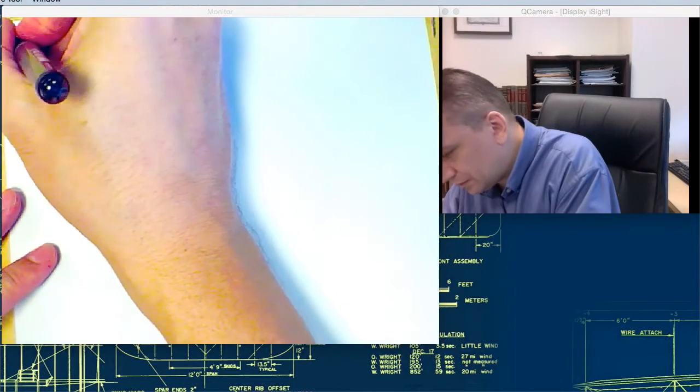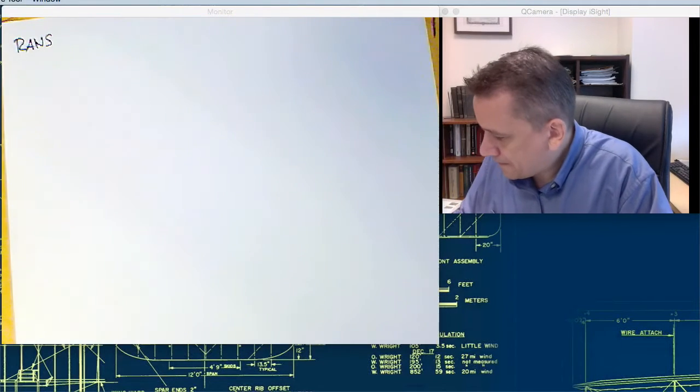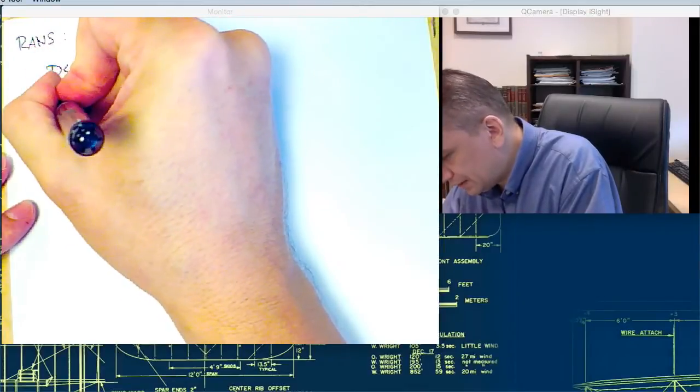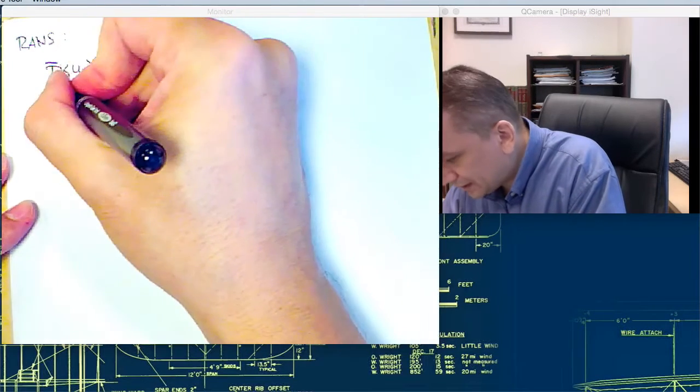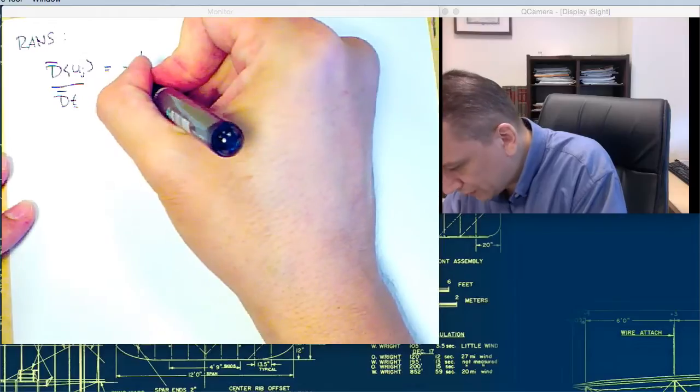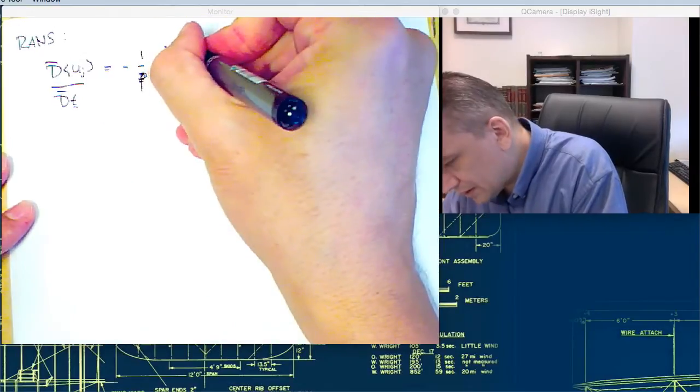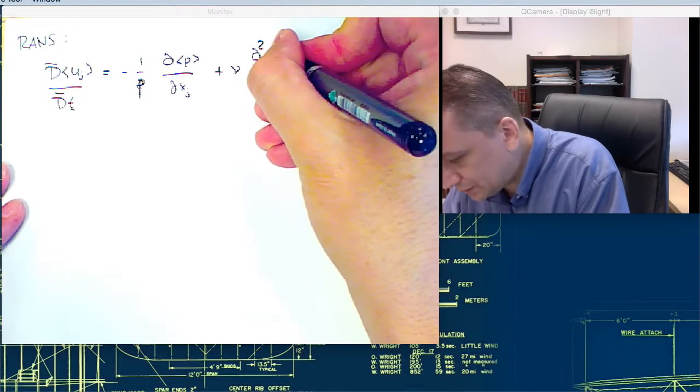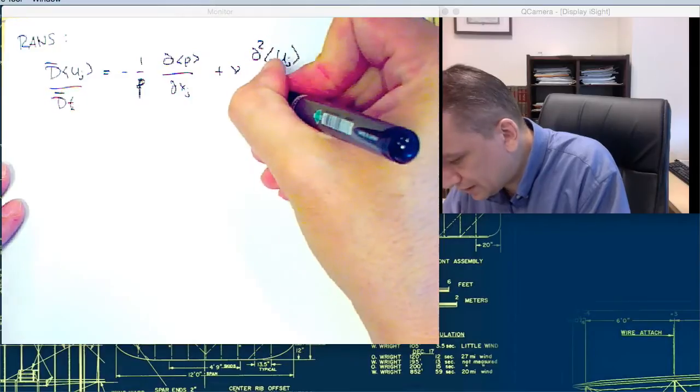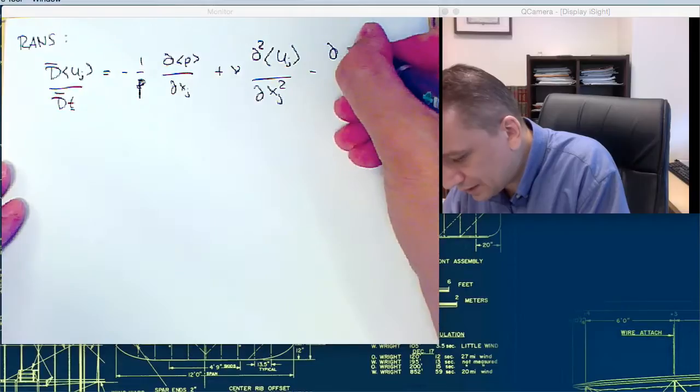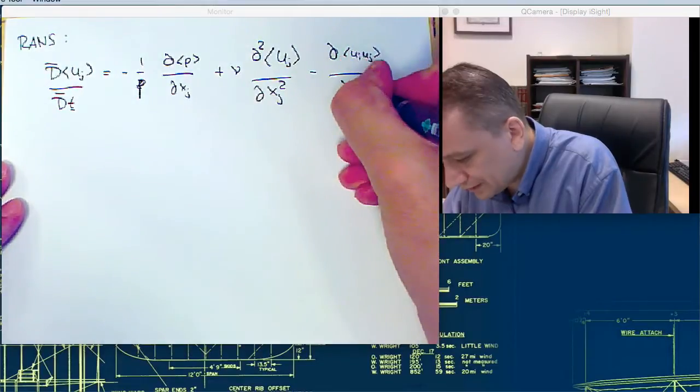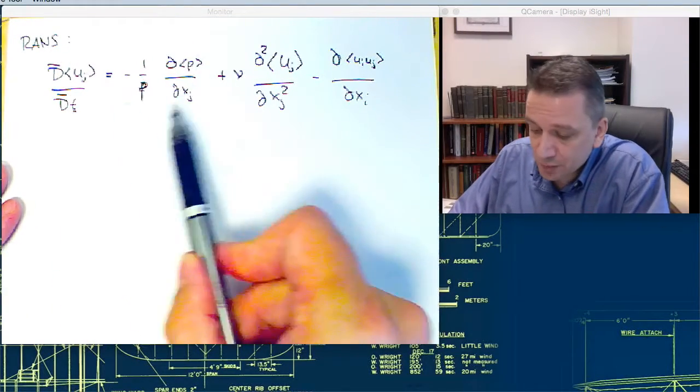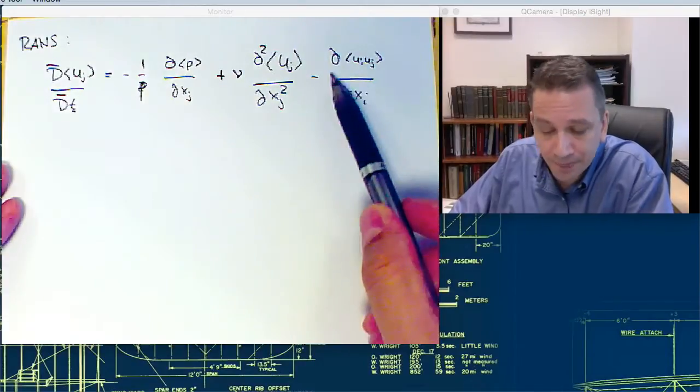So we start with the RANS. The total derivative of uj over dt is then equal minus one over rho dp over dxj, plus nu times d2 uj over dxj squared, minus d ui uj over dxj. So the total derivative, the temporal change plus the convective part, the pressure term, the viscous term, and the Reynolds stress tensor.